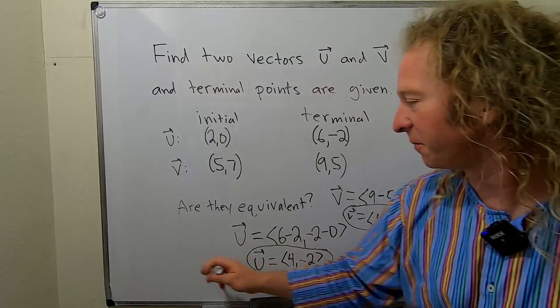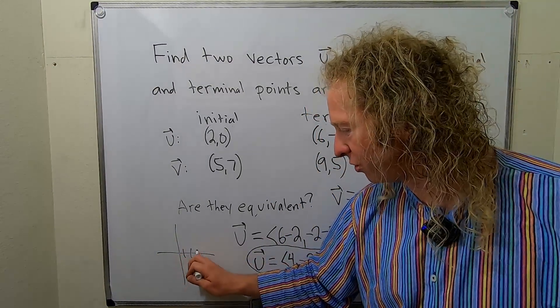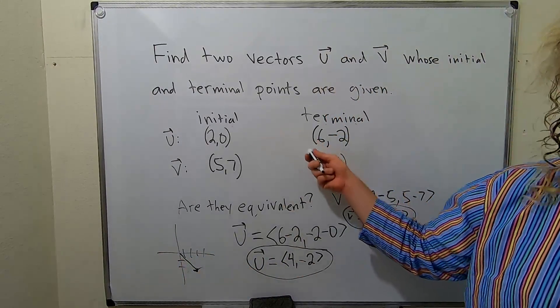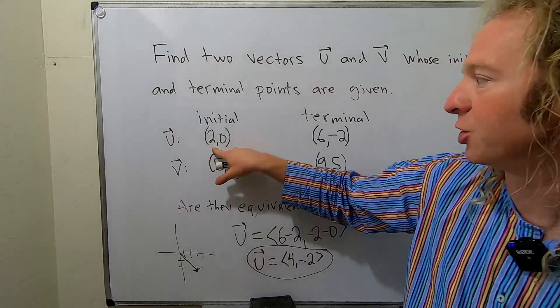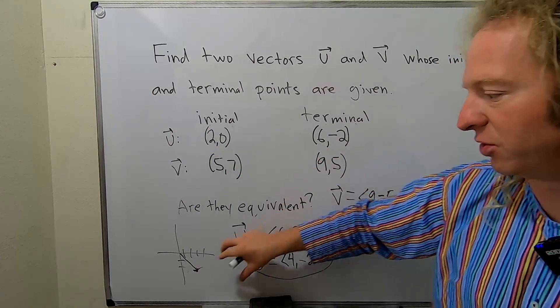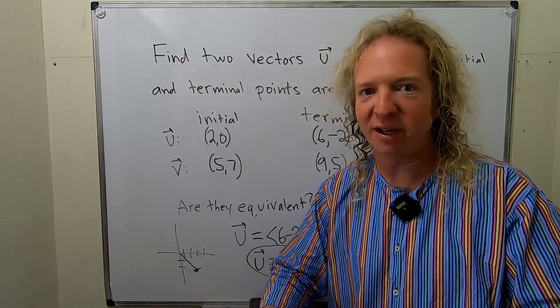So this vector here, you go right 4 and down 2. One, two, three, four, and down one, two. Looks like this, right? Same as this one. They're the same thing, just somewhere else. The initial point here is (2,0) and the terminal point is (6,-2). It's like you've taken this vector and put it in a different position on the plane.